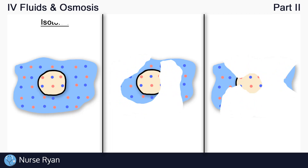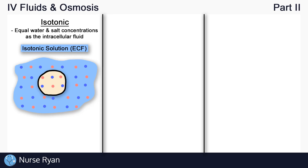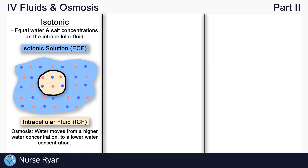Starting with an isotonic solution — iso means the same, and tonic refers to the solute concentration, which is just the salt in this case. So an isotonic solution has the same or equal concentration of water and salt as the intracellular fluid. The isotonic solution is essentially the extracellular fluid, while the inside of the cell is still the intracellular fluid. Since everything is equal — equal water and salt concentrations — osmosis does not take place. The water doesn't move in or out of the cell, so the cell stays the same size.